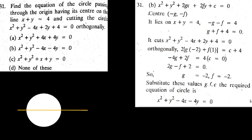Find the equation of the circle passing through the origin, having its center on the line x plus y is equal to 4.